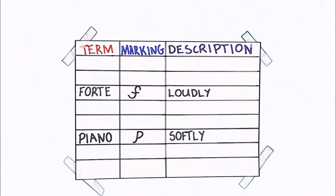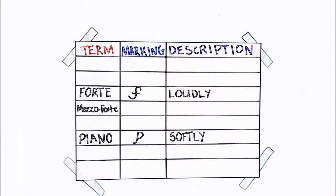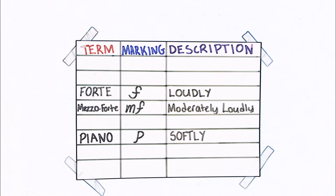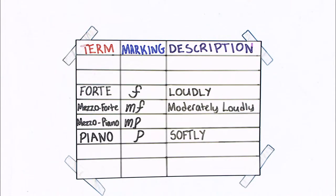In between we have Mezzo Forte, represented by the symbol MF, and indicates moderately loud volume. And just underneath that is Mezzo Piano, symbol MP, and means to play moderately softly.